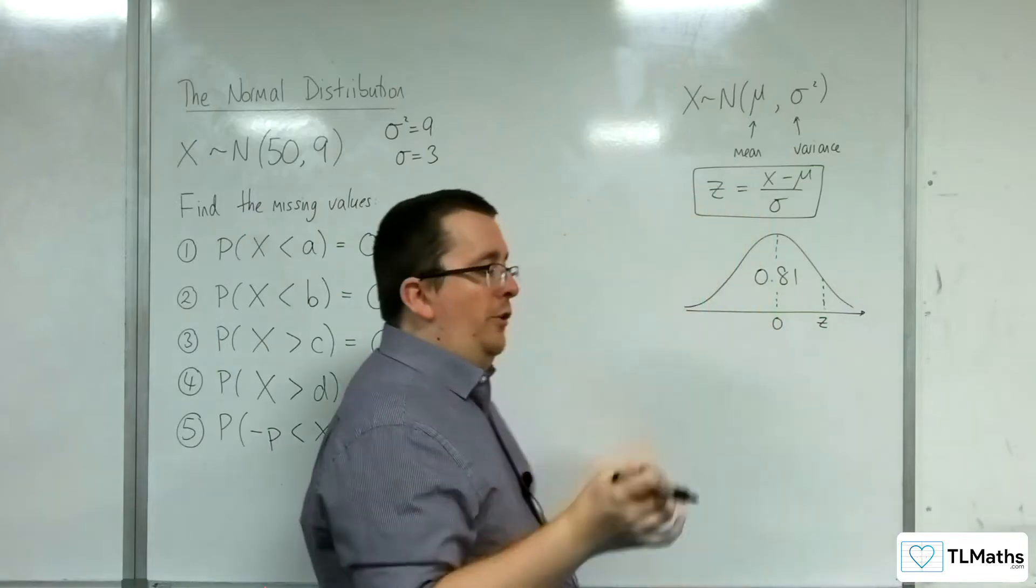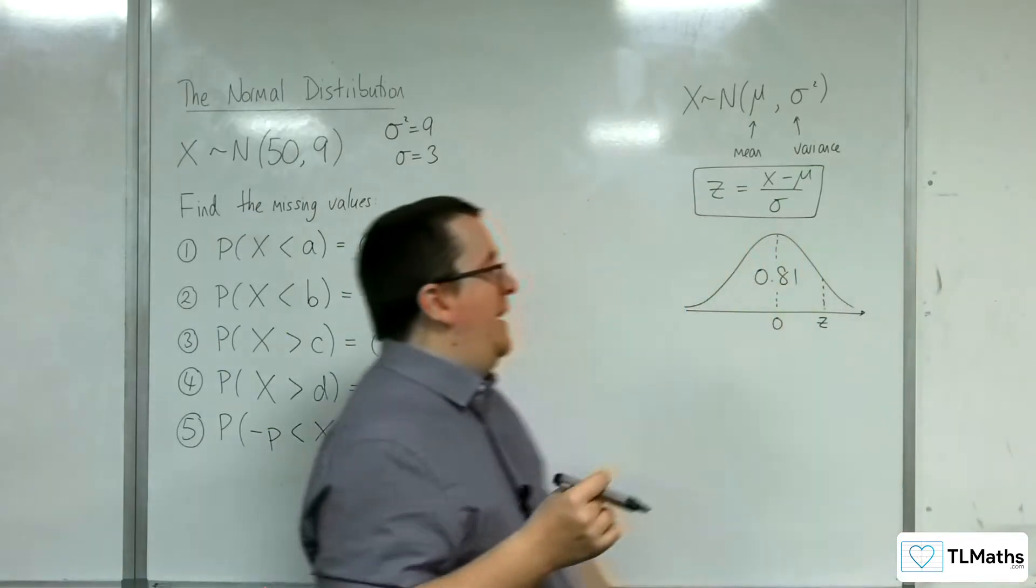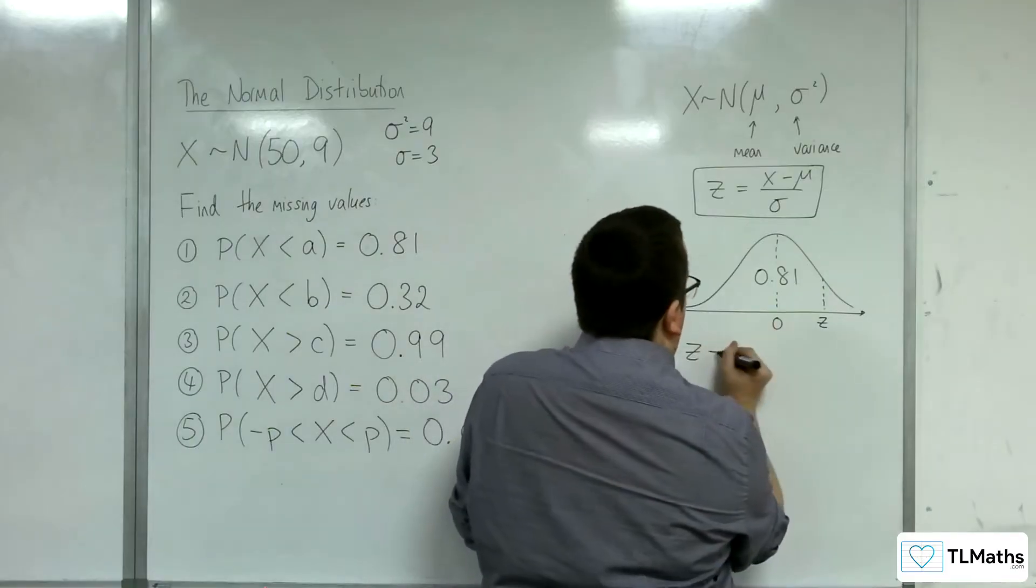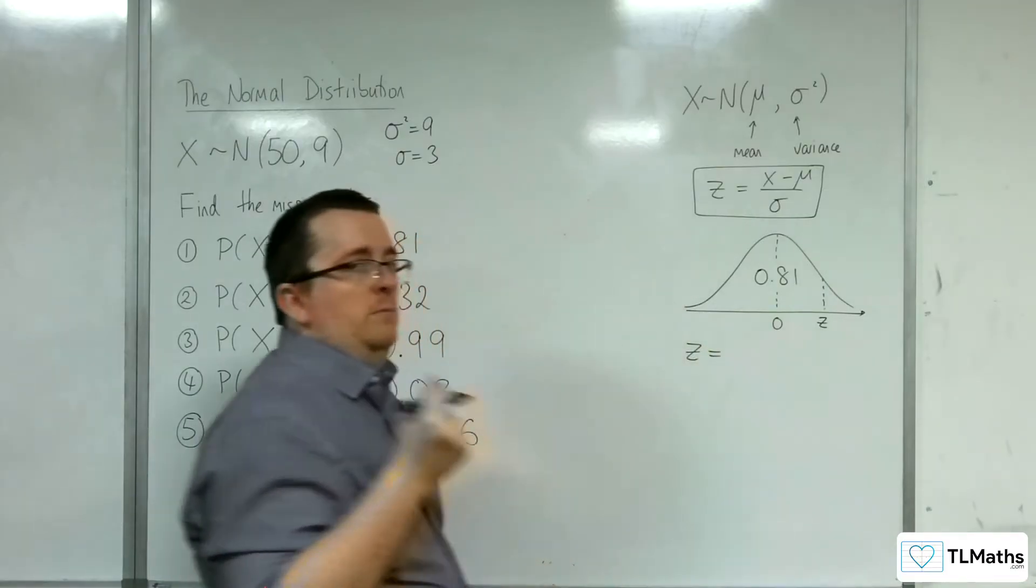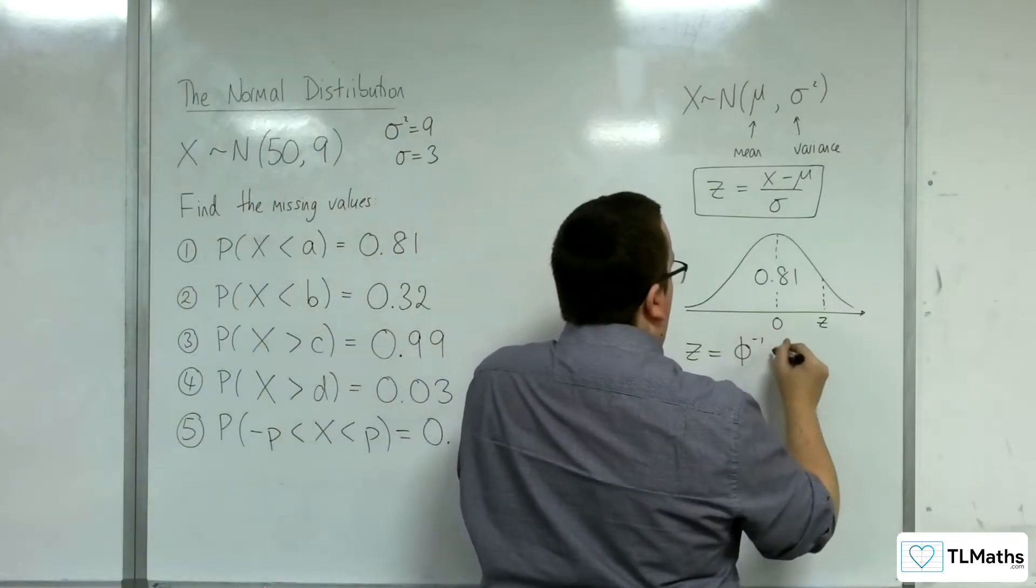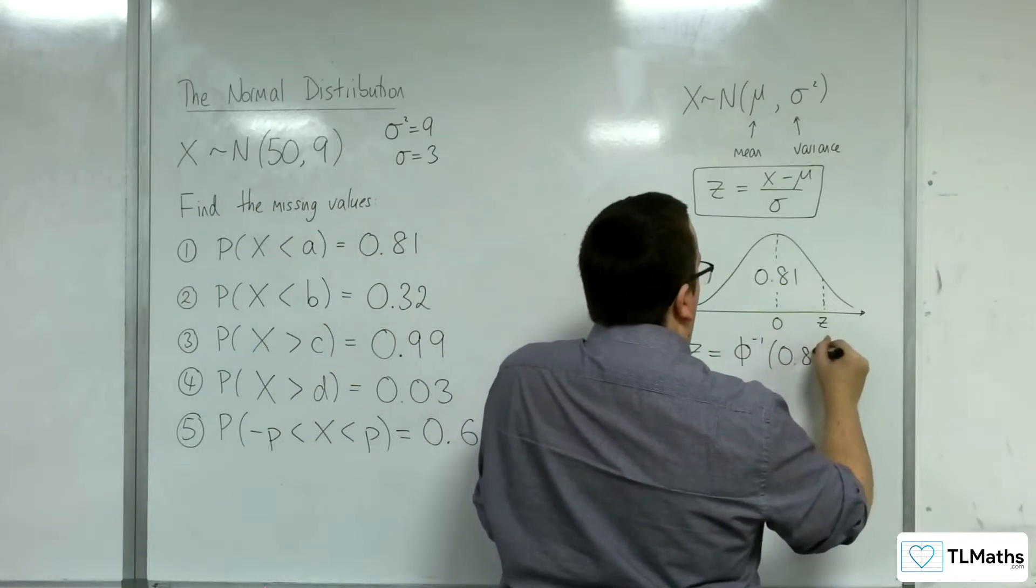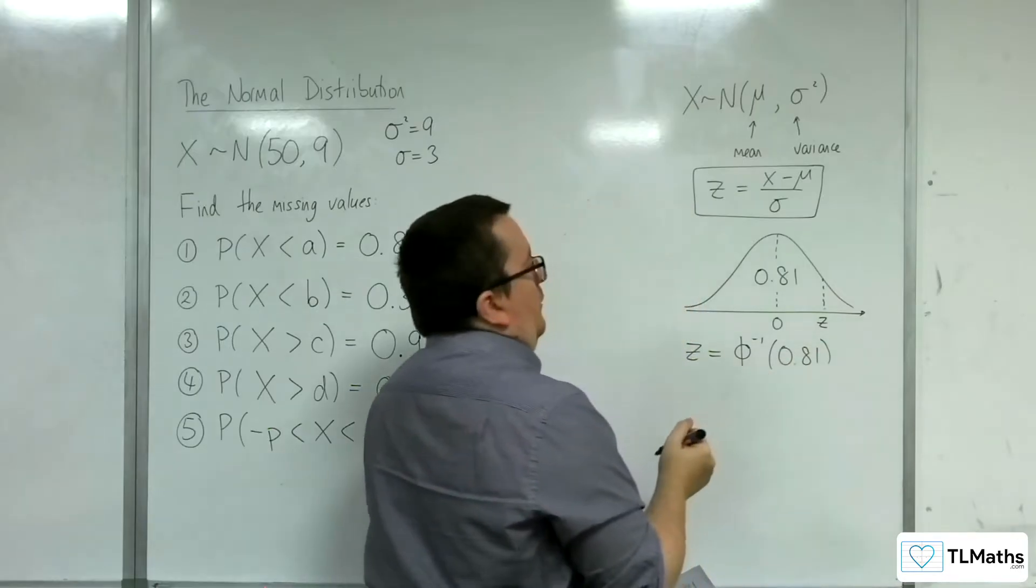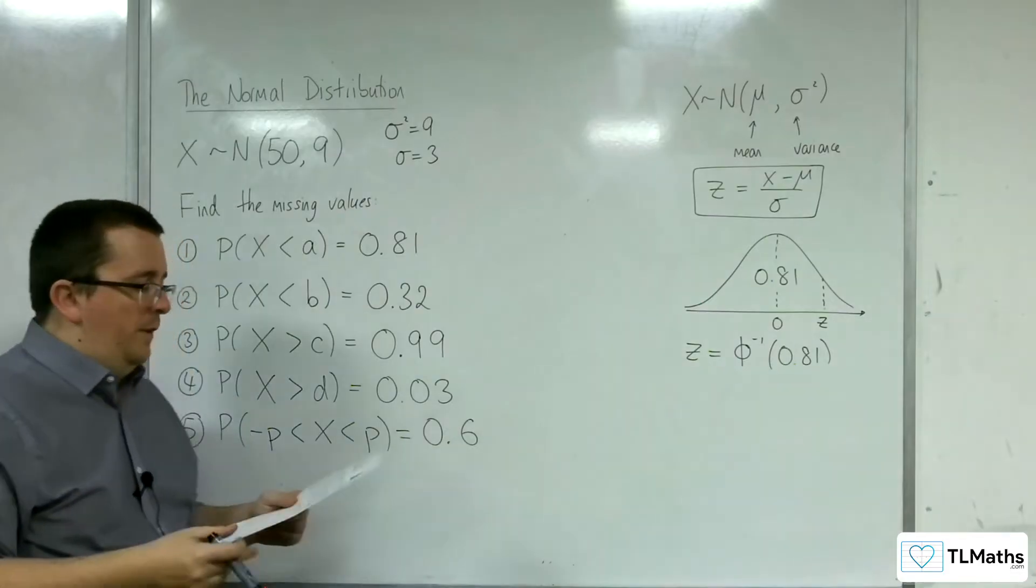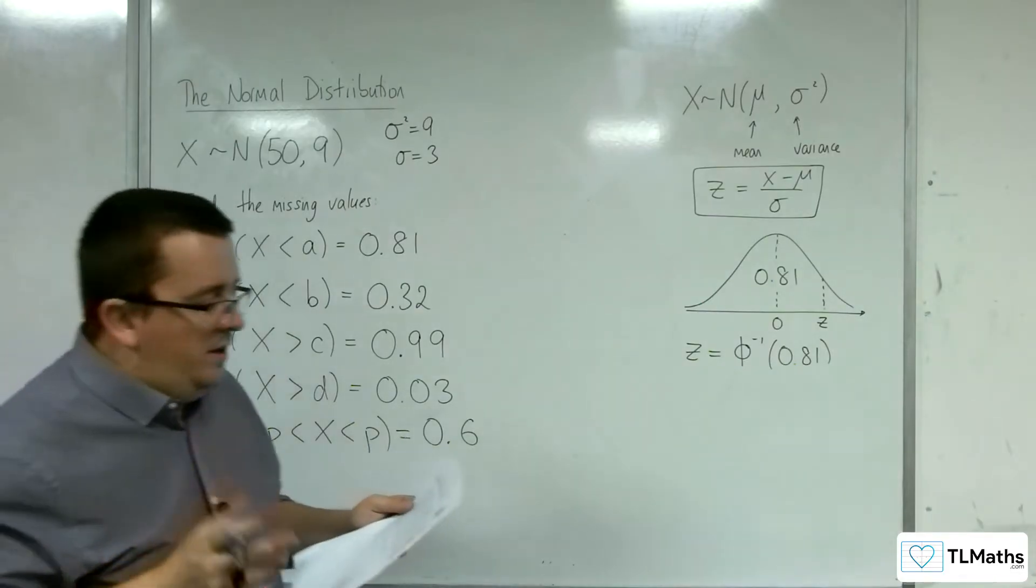So because of that, I'm not using my calculator, I'm not using the tables. Because of that, I can work out the value of z. Now, sometimes this is written as the inverse norm of 0.81. Sometimes this notation is used, phi to the minus 1. You don't have to use that notation. But it's nice to have seen it.